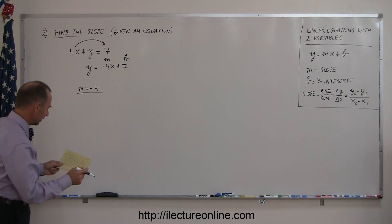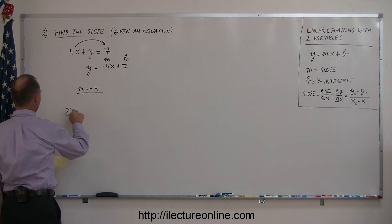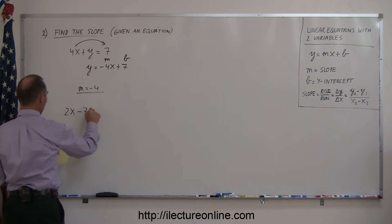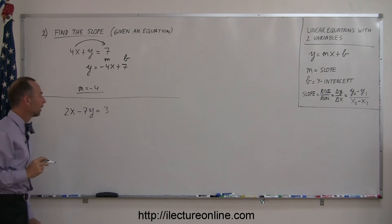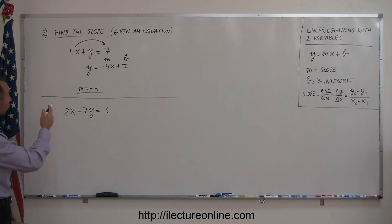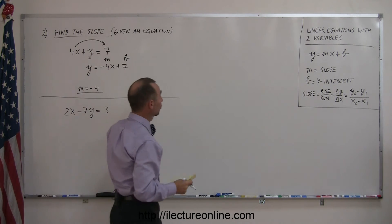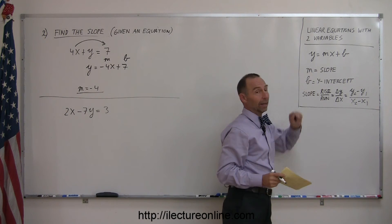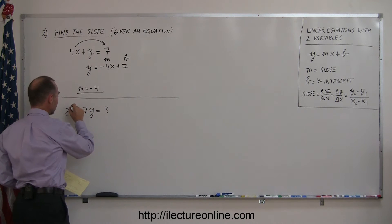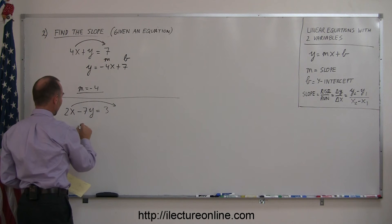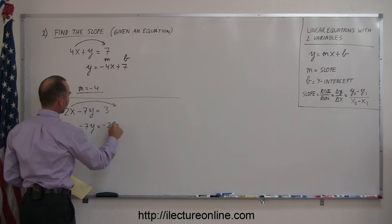What if you get an equation like this? 2x minus 7y equals 3. Let's put a line there so we don't get those two confused. Again, to find the slope, what you want to do is put the equation you were given in this exact format, meaning you want the y on the left side and everything else on the right side. So let's move the 2x over here.